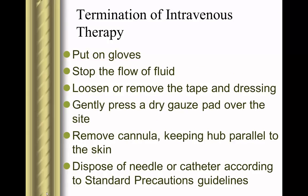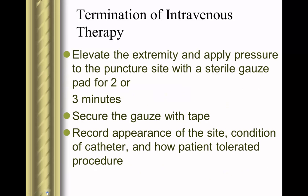To terminate IV therapy, use gloves, stop the fluid, remove the tape and dressing. Gently apply pressure with a dry gauze pad and remove the cannula keeping it parallel to the skin. Dispose of the needle or catheter according to hospital standard precautions guidelines. Elevate the extremity and apply pressure. Secure the gauze with tape and document the appearance of the site, the condition of the catheter — whether it was bent or the tip intact — and how the patient tolerated the procedure.